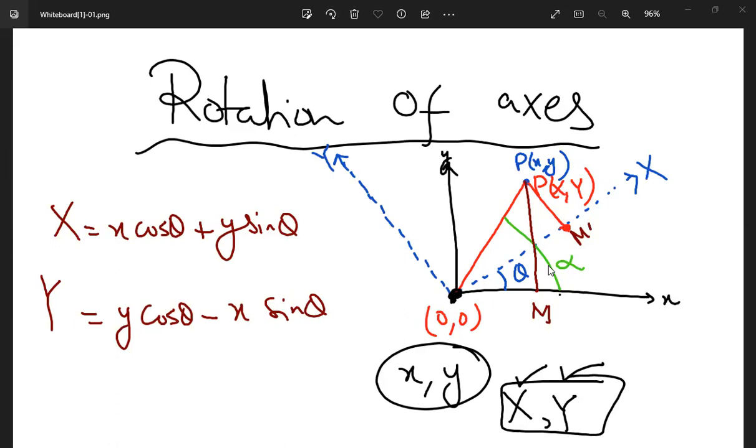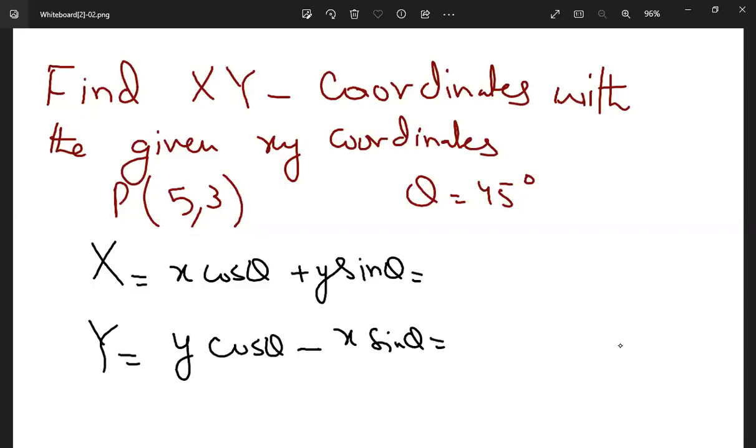First we will see the example. The question is: find X, Y coordinates with the given old coordinate x, y equals 5, 3. 5 is small x and 3 is small y, and the theta is also given. We will just use the coordinate equation, insert the values, and get the answer.